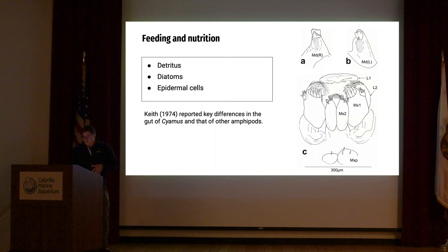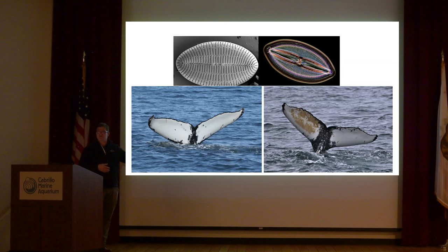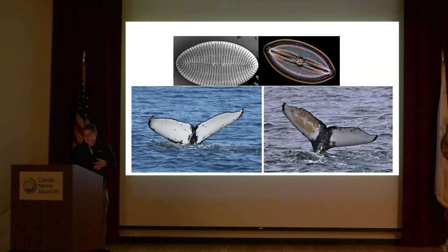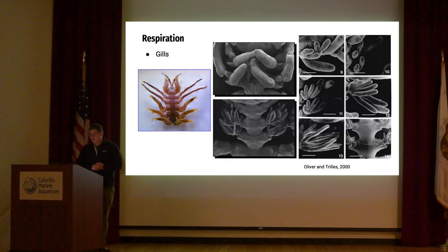Here are a couple of diatoms — representatives of genera found on whales. If you look at the flukes on the left and compare them to the ones on the right, you'll see a film on the right — those are diatoms. A lot of the coloration you see on the surface of whales is due to these algal cells growing in films. People decades ago were interested in this and examined whale lice gut contents. There are recent papers where researchers have done the same. When it comes to respiration, these animals performing cellular respiration need oxygen just like we do.